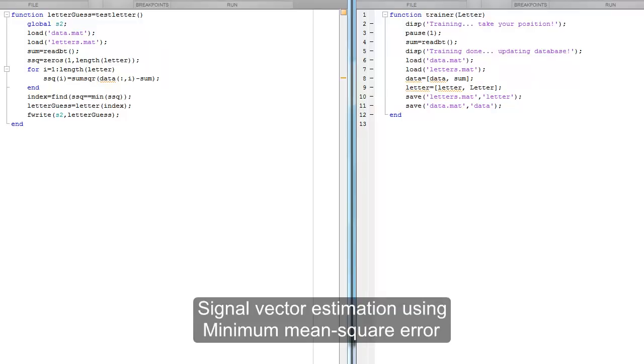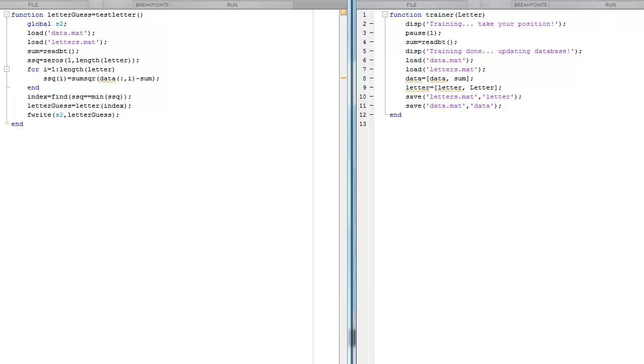We will now demonstrate gesture learning and recognition using MATLAB. We implemented a training algorithm to tabulate the expected signal vector for each hand gesture. We then used a minimum mean square error algorithm to recognize hand gestures. The computer then sends the data to an Android mobile which can articulate the characters sent using an onboard text-to-speech algorithm.